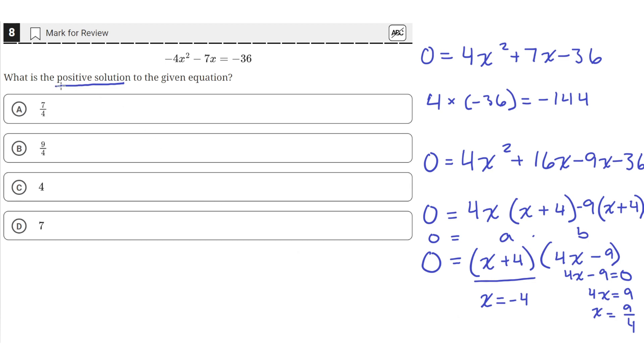Now going back to the problem statement, it asked us for the positive solution to the given equation. So this solution here is negative. So we're not going to use that. But x equals 9 over 4 is positive. So we'll use that as the solution. And x equals 9 over 4 is answer choice b. So b is the correct answer.